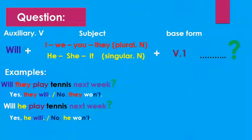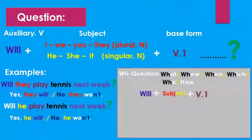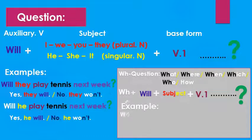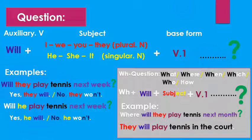Now let's move to the WH question by using what, where, when, which, who, and how. So here we have the same: will, then the subject, then the base form, and then the question mark. But here we put in the beginning the WH question. For example: Where will they play tennis next month? But here the answer is a full sentence. So they will play tennis in the park. Okay guys.